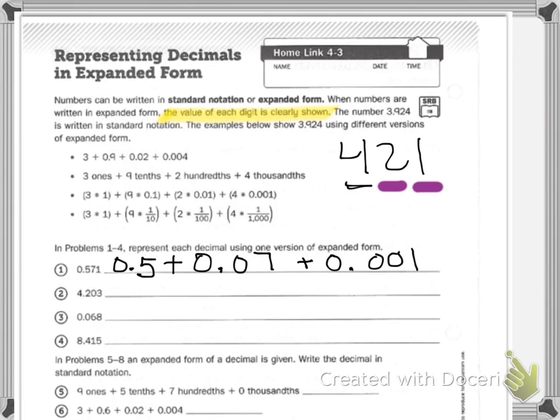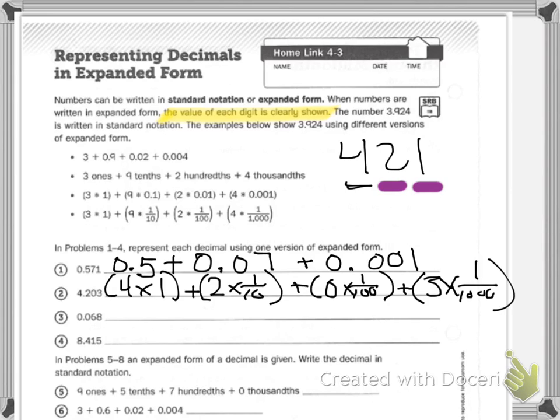I can also write it in words or in fractions or as multiplication problems. If I wrote number 2 like this, I could do 4 times 1, because I'm in the ones spot, plus 2 times 1 tenth, because to get a decimal I have to put it over a fraction, plus 0 times 1 hundredth, plus 3 times 1 over 1,000. I just wanted to show you different ways to do it. You are more than welcome, if the way I did number 1 is the easiest way, do that for the rest of them.